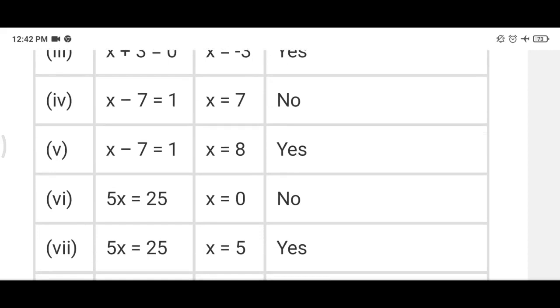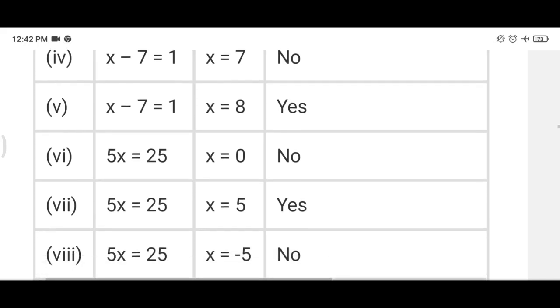Now in fourth part, x minus 7 equal 1. Here you will put 7, so 7 minus 7 is 0, not 1. That's why we will write here no. Fifth part we put x equal 8, so 8 minus 7 is 1. And we have 1 on the right hand side also, that's why we will write yes, it is the answer.